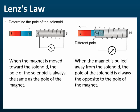We have learned that when a magnet is inserted into a solenoid, a current will be induced. From Lenz's law, we learned that the induced current will produce a magnetic field that will oppose the motion of the magnet. Now let's see how this happens and how we use this to determine the direction of the current.